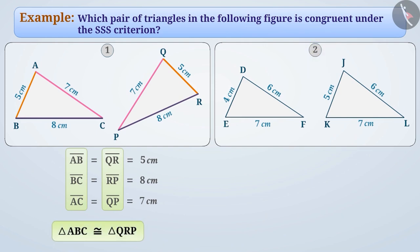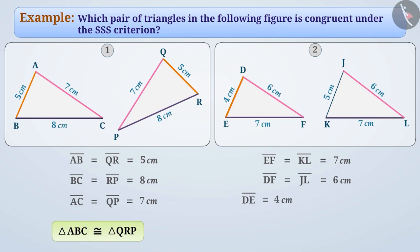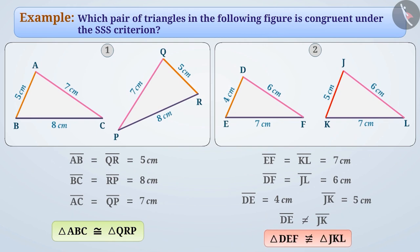Now let's talk about the second pair, i.e. triangle DEF and triangle JKL. Here, EF is equal to KL is equal to 7 cm, DF is equal to JL is equal to 6 cm, but DE is equal to 4 cm and JK is equal to 5 cm, i.e. DE is not equal to JK. Since one side of triangle DEF is not equal to the corresponding side of triangle JKL, hence triangle DEF is not congruent to triangle JKL. Therefore, only the first pair of triangles, i.e. triangle ABC and triangle QRP, are congruent under SSS criterion.